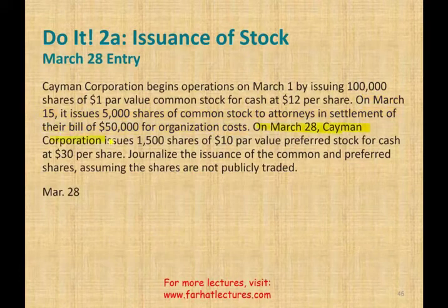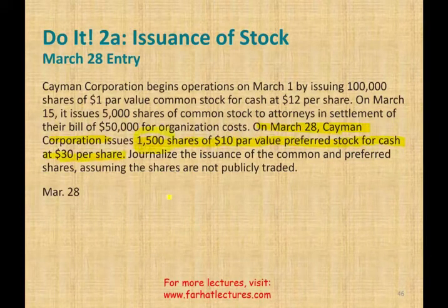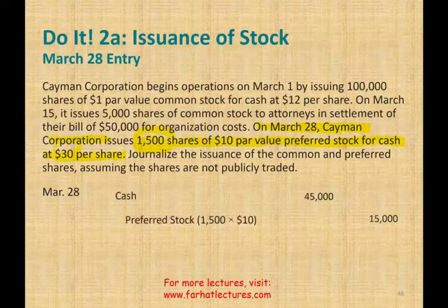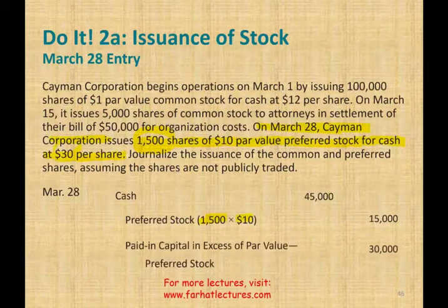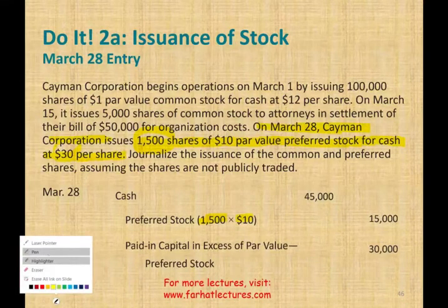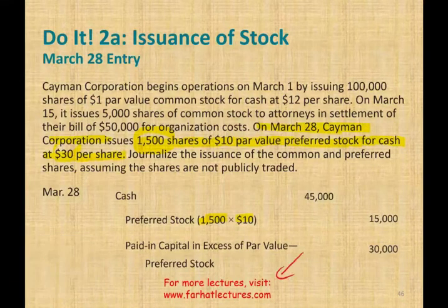On March 28th, Kaming Corporation issues 1,500 shares of $10 par value preferred stock for cash at $30 per share. They receive $45,000 cash. Credit preferred stock: 1,500 × $10 = $15,000. Paid-in capital in excess of par, preferred stock: $30,000. If you have any questions or comments about how to issue common or preferred stock, please email me. If you're studying for the CPA exam, study hard — it's worth it.